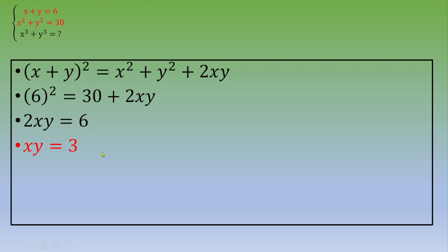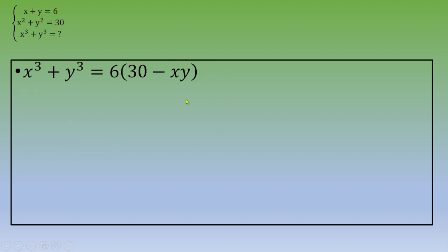Well, now, you can plug that in this equation. x cubed plus y cubed equals 6 times 30 minus xy.